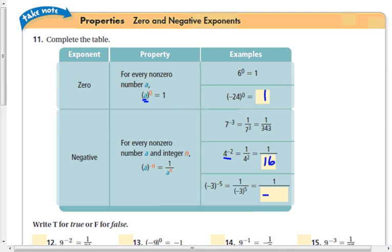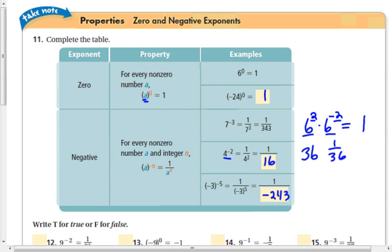Another way to look at this: if you take a number like 6 to the second and multiply it by 6 to the negative second, you can check this on your calculator — whenever you multiply the same base with opposite exponents it equals 1. This tells us those two numbers are reciprocals. So if 6 to the second is 36, then 6 to the negative second has to be the reciprocal, which is 1/36.